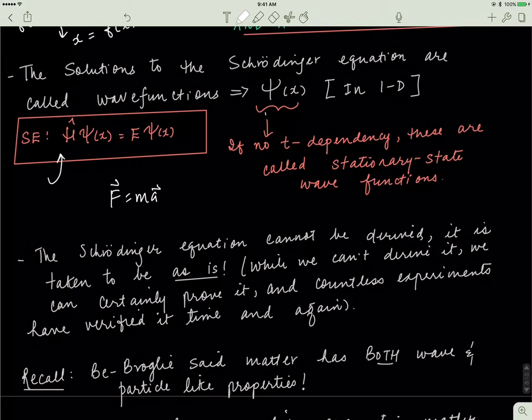Before we do that, let's recap what de Broglie said. De Broglie said that matter behaves like waves and particles — he said that matter has a dual nature. It has both wave-like properties and particle-like properties. You can't say that matter is a wave or a particle; matter is both a wave and a particle, taking on one behavior depending on the situation you impose it in.